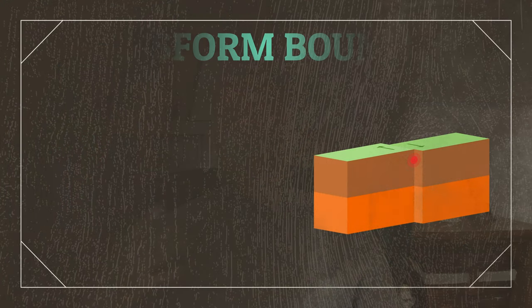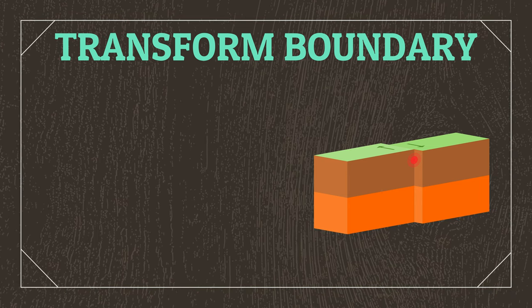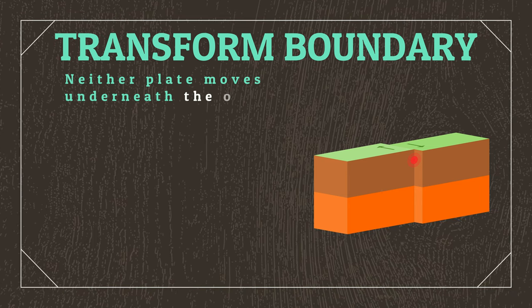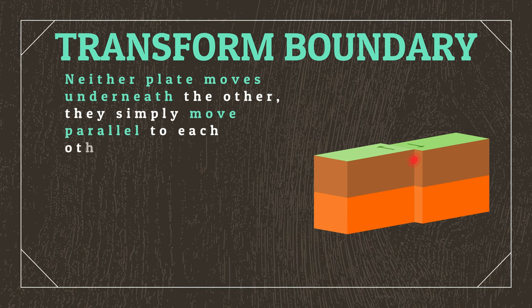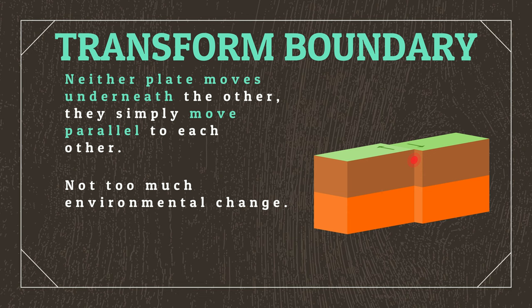Finally, we have transform boundaries, which are pretty straightforward. Neither plate moves underneath the other — instead, they simply move parallel to each other. There won't be too much environmental change to the area like mountains or trenches, but instead, you can just expect earthquakes. Given the very strange shape that tectonic plates can take, it's likely that each plate will have multiple different types of boundaries. As long as you have a rough idea of what's going on with the plates, then you can make an educated assumption of what's going to be occurring on the surface.